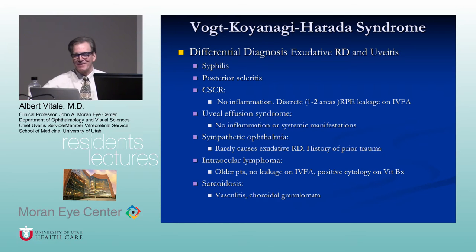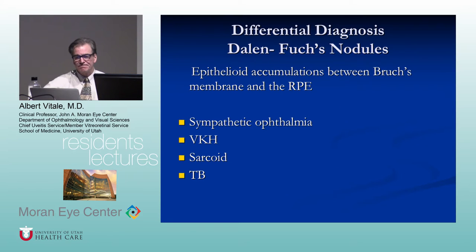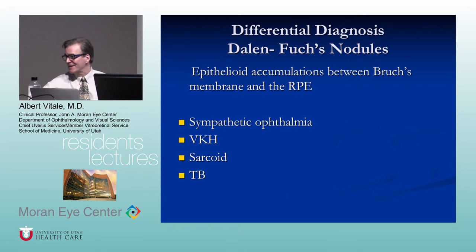Differential diagnosis of exudative retinal detachment with uveitis includes posterior scleritis, syphilis, central serous, uveal effusion syndrome, sympathetic ophthalmia, lymphoma, and sarcoid. Dalen-Fuchs nodules can be seen in sympathetic ophthalmia but also in VKH, sarcoid, and TB.